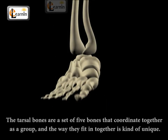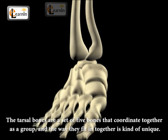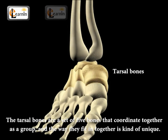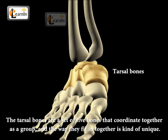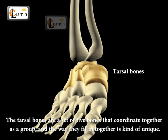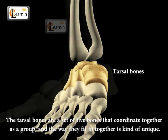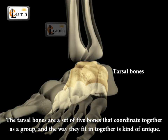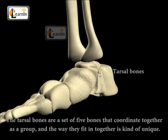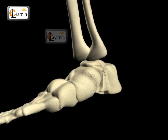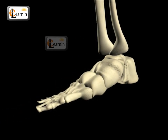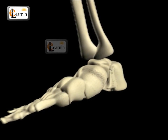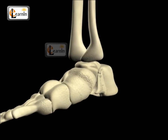The tarsal bones are a set of five bones that coordinate together as a group, and the way they fit together is kind of unique, especially the way when they lock and unlock themselves to provide movement of the foot in different directions.